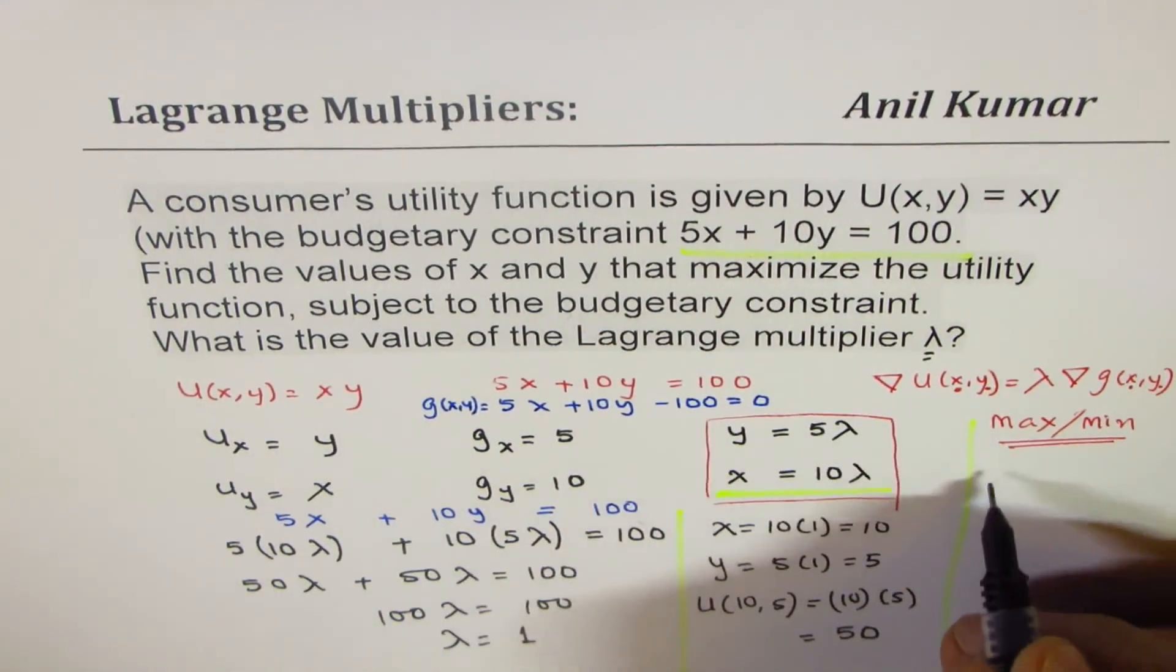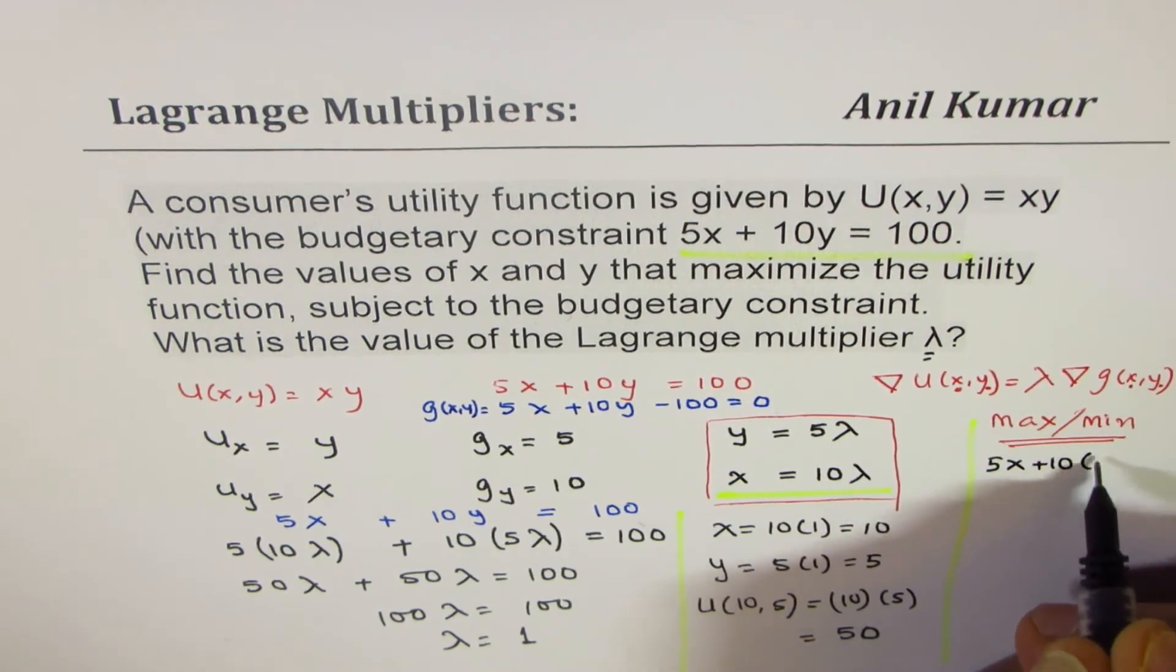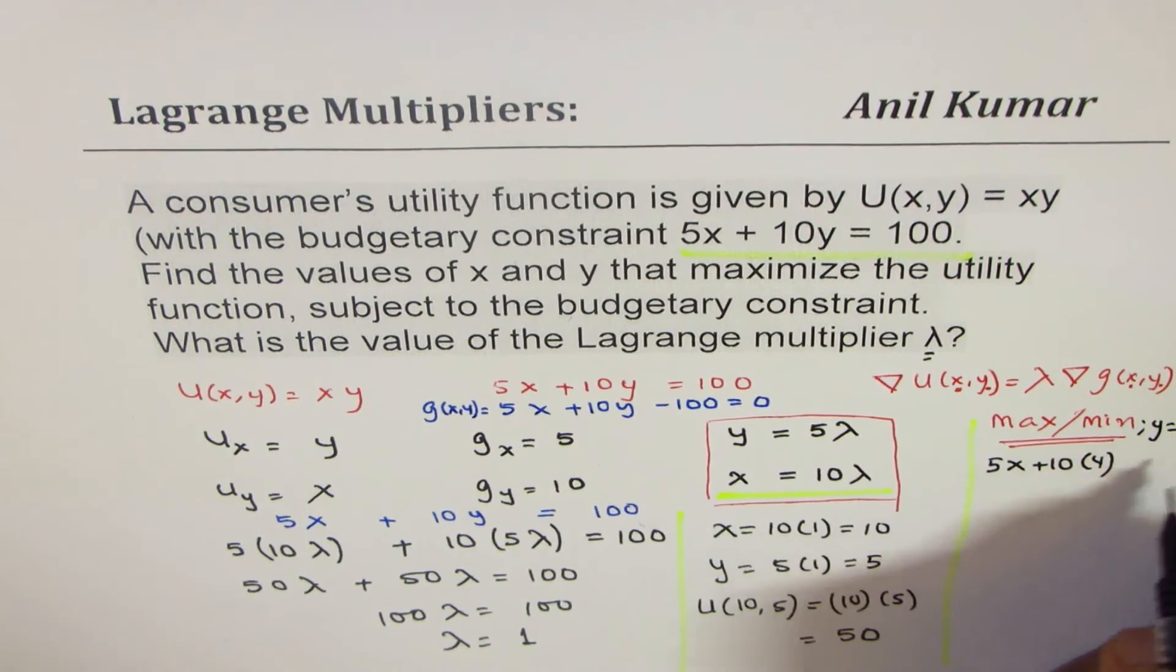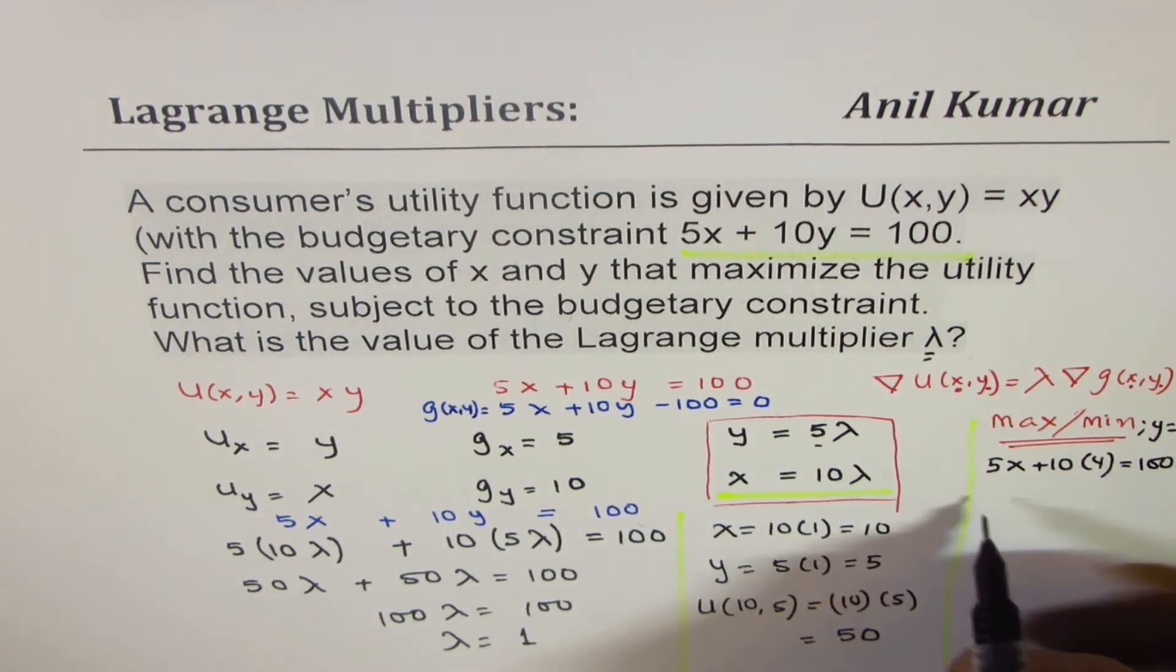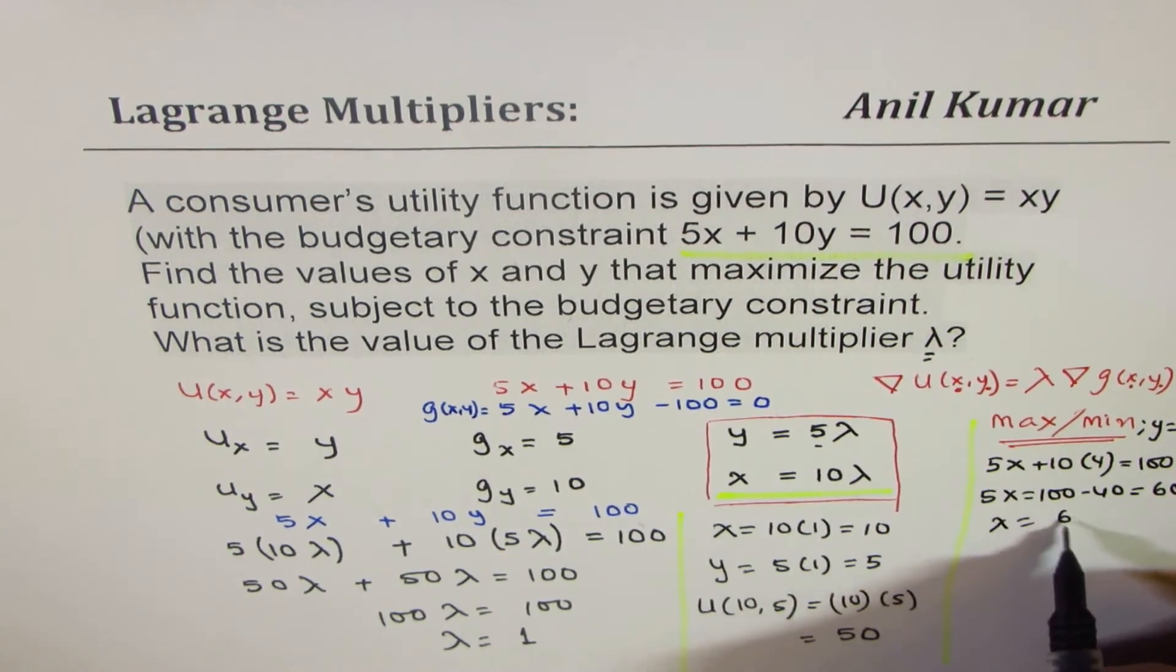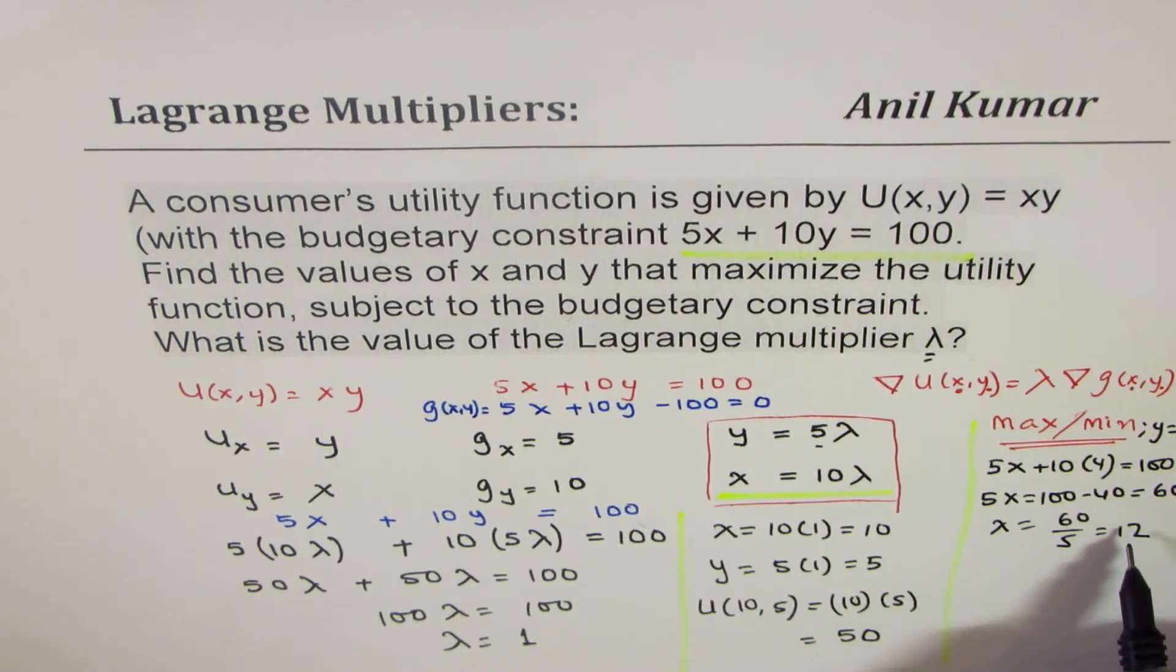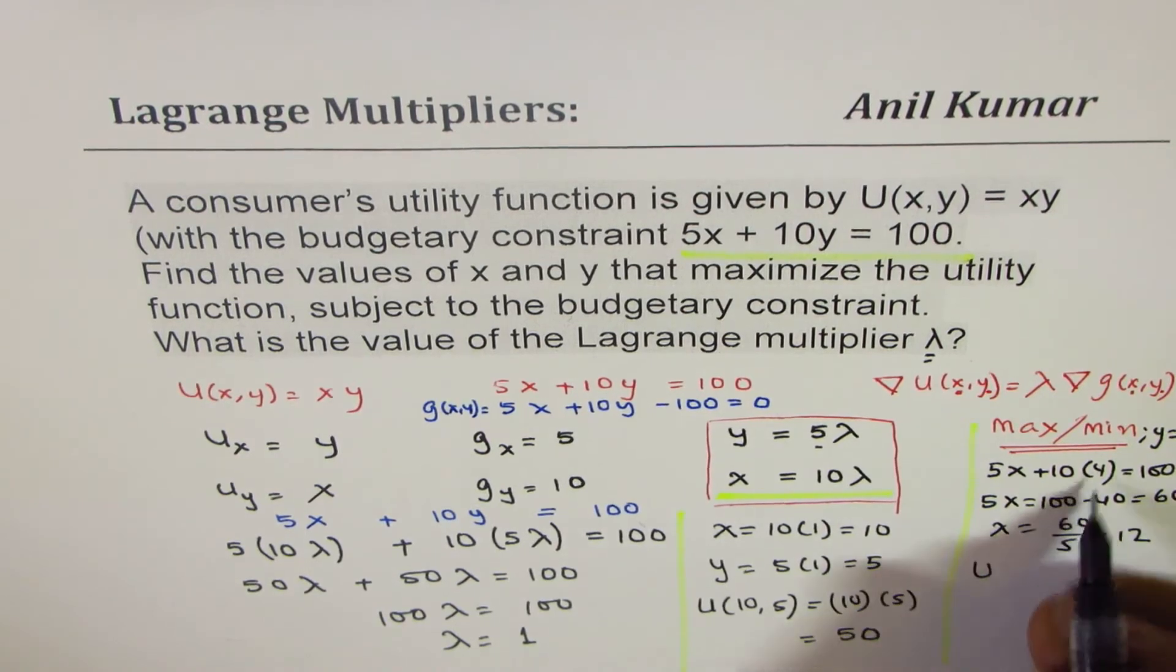So we have this equation 5x plus 10 times 4. So what we have done is, we're checking for y equals 4, which is close to 5, equals 100. That gives you 5x equals 100 minus 40, which is 60, or x is equals to 60 over 5, that is 12.